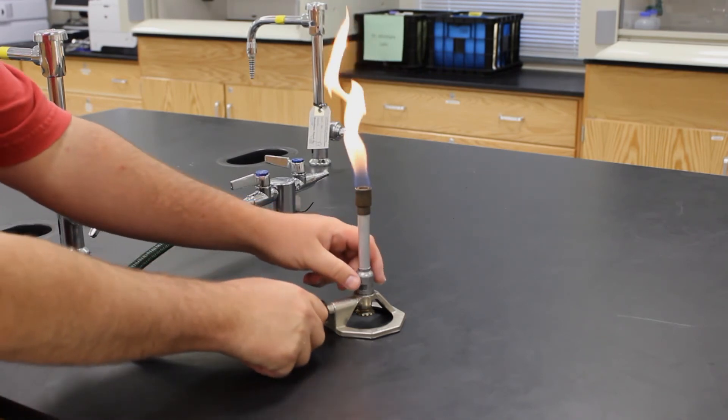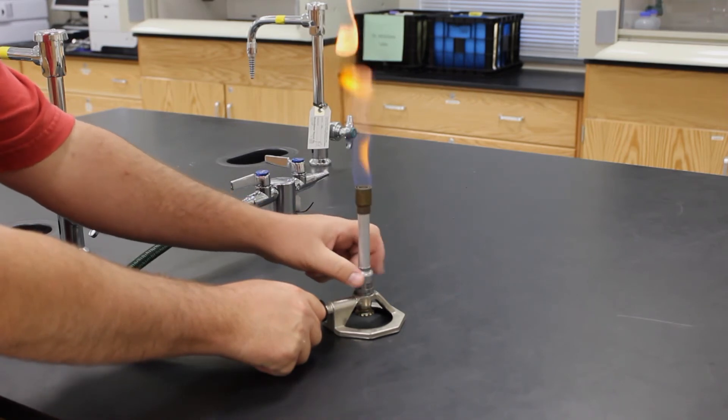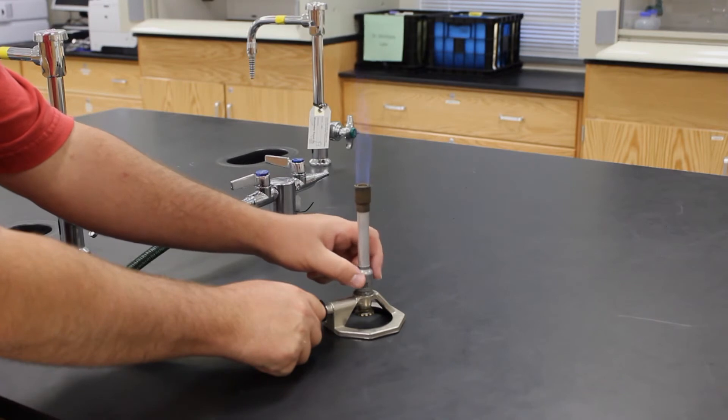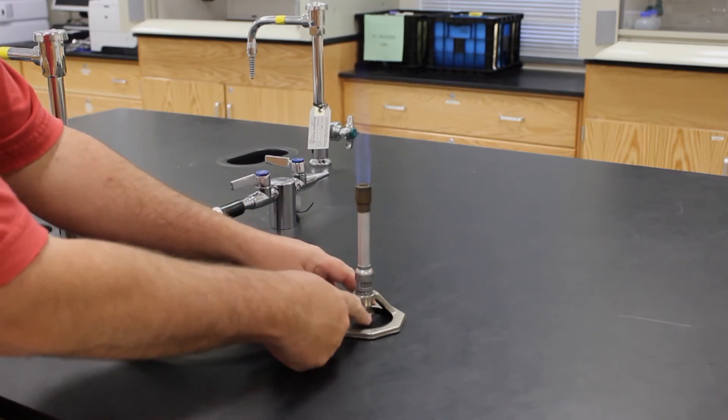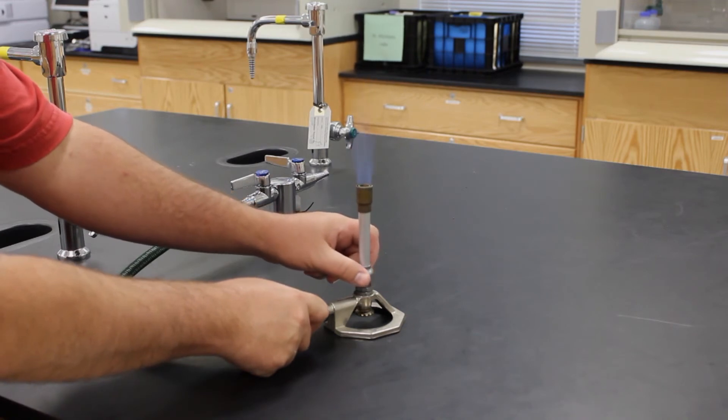Adjust the needle valve first if needed so you have a flame that's about four inches high. Then adjust the air ports so you have a blue flame with an inner cone. At the end, you may have to readjust the height of the flame and or the color of the flame.